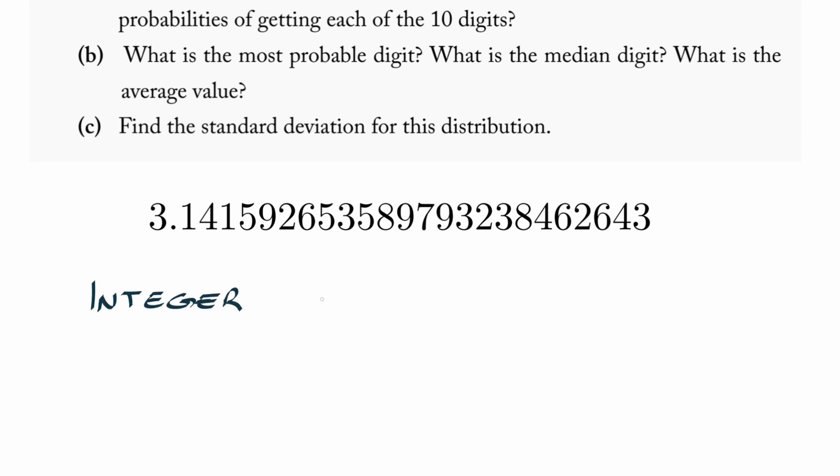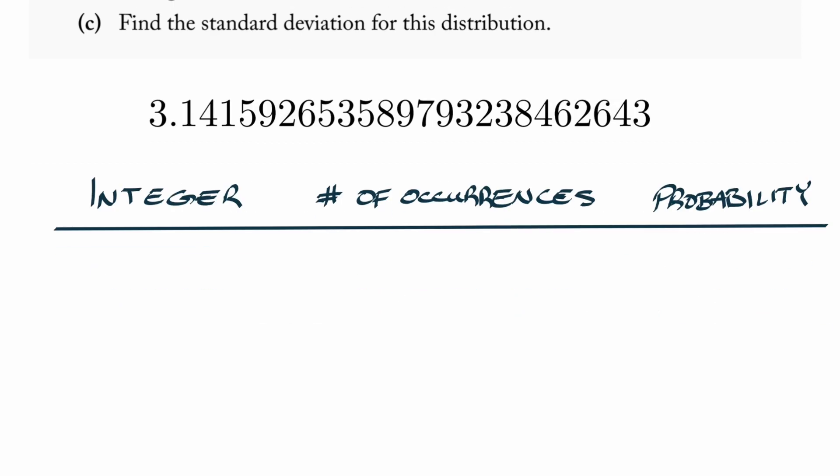For this table we're going to have three different columns: integer, so zero through nine; number of occurrences, so that's how many times does that digit come up; and then the probability is just going to be the number of occurrences out of 25, which is the total number of digits that we're considering here.